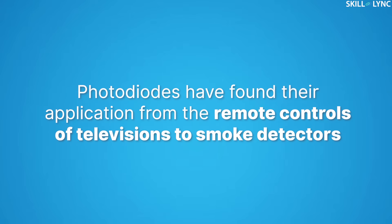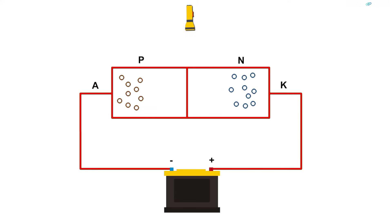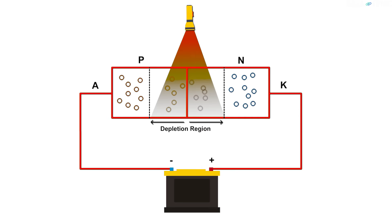Photo diodes have found applications from the remote controls of televisions to smoke detectors. Photo diodes consist of a p-n junction connected in reverse bias, where the p-junction is connected to the negative terminal of the battery and the n-terminal is connected to the positive terminal. Due to this, a wide depletion layer is formed. When photons from light fall on the depletion region, it leads to the generation of electrons and holes.